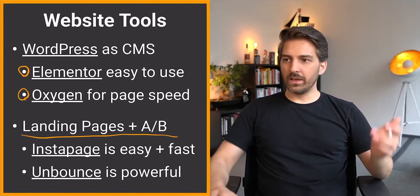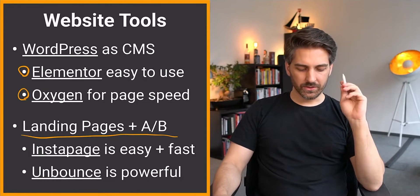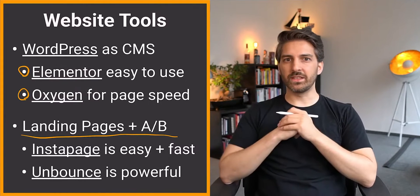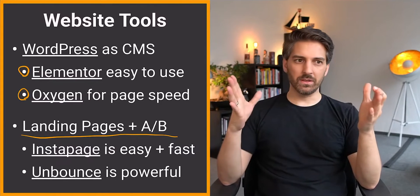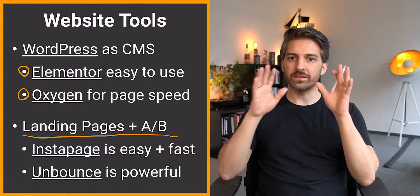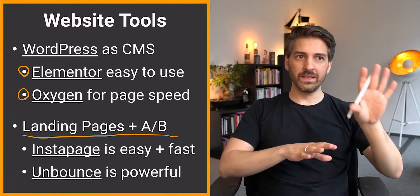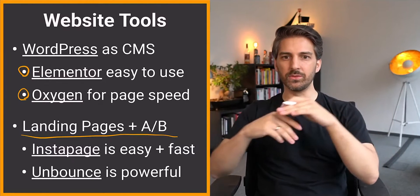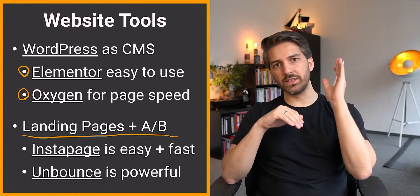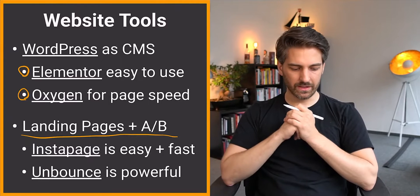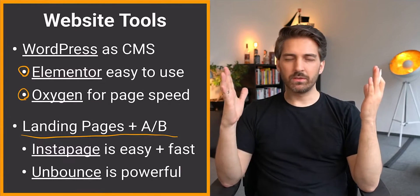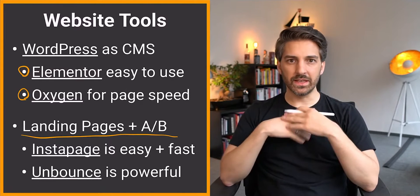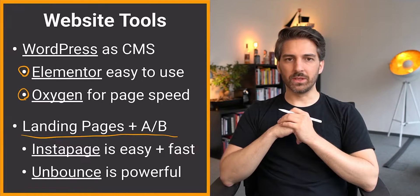Another alternative is Unbounce. It's very powerful and has some of the strongest A/B testing capabilities — for example, if you want to measure effects on several steps of a funnel, you can easily do multivariate testing and see step-by-step conversion rate optimizations. If you want to keep it as simple as possible, go for just a WordPress website with Elementor or Oxygen, and then add dedicated tools if you need them.